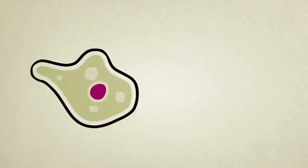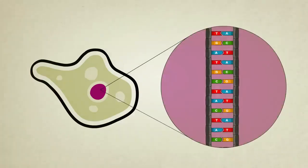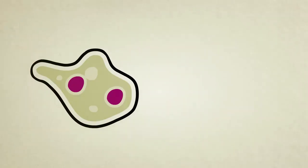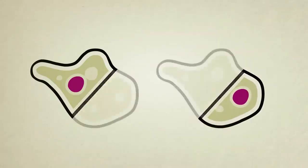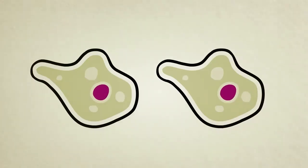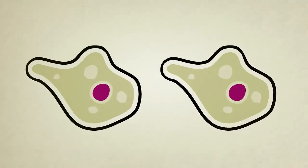Single-celled amoebas and other simple creatures reproduce by copying their DNA inside their guts, moving both copies to either side of their body, splitting in two right down the middle, and then growing back to full size. If all goes well, the two new amoebas will be exact copies of each other, but in nature, things aren't always perfect.